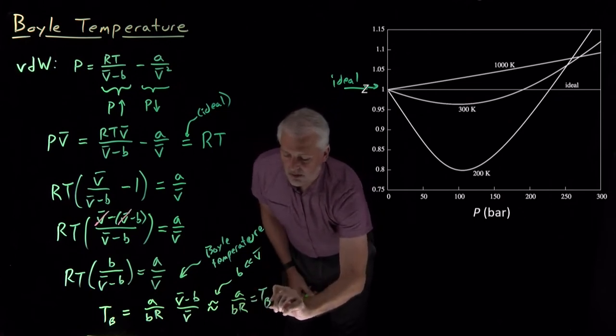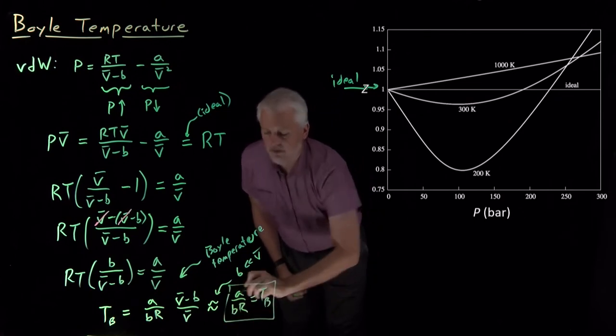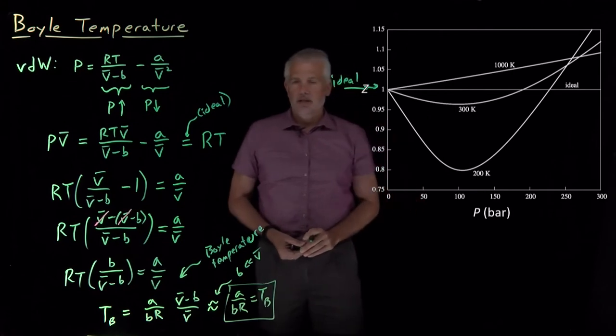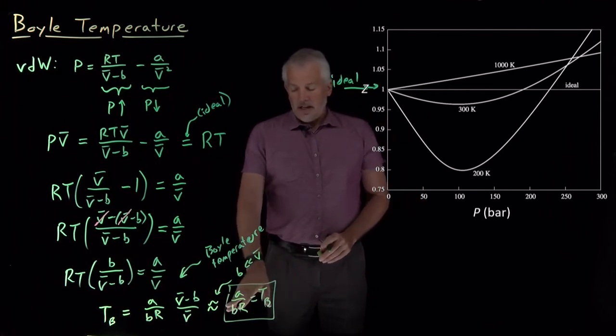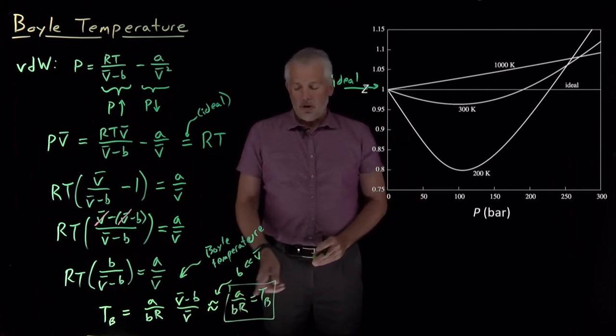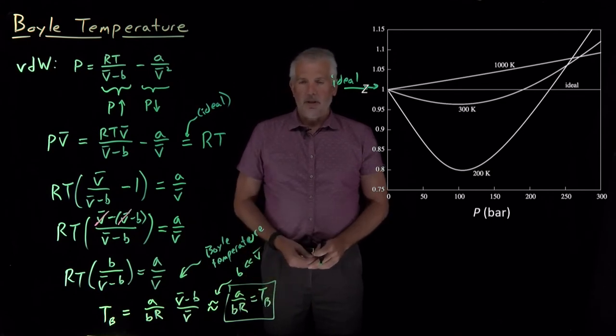So I'm left with just this expression, a Boyle temperature of A over B times the gas constant. So that's now a constant for any given gas. If I know A and B and R, I can calculate this quantity, the Boyle temperature.